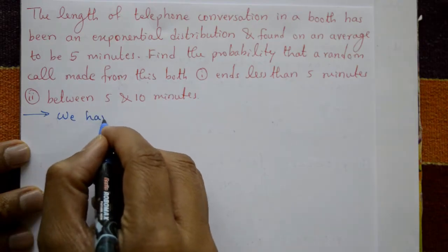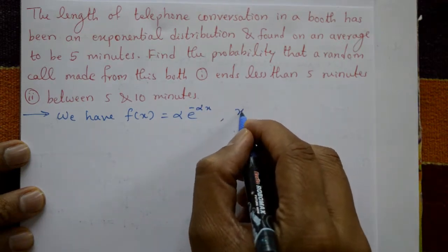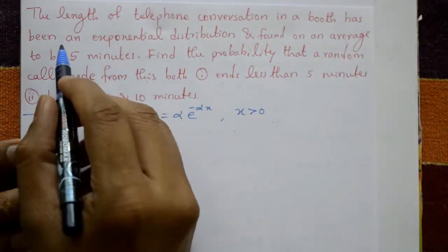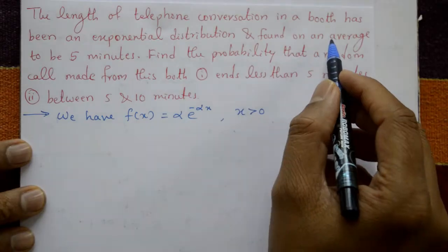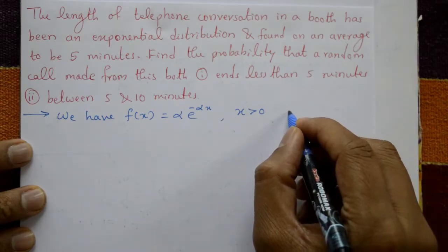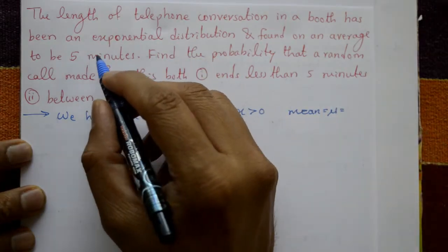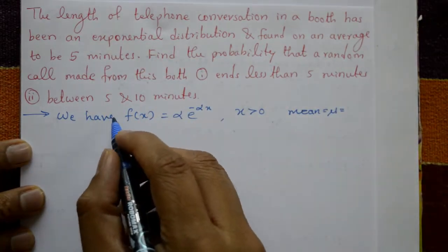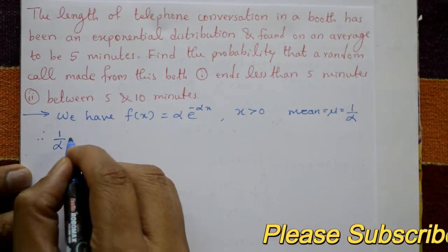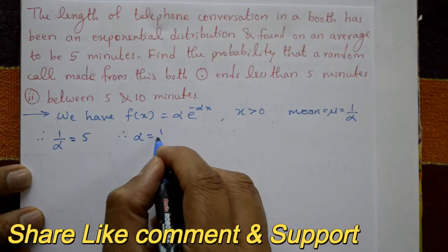We have f(x) = α · e^(−αx) for x > 0. The average, meaning the mean, is 5 minutes. In the exponential distribution, the mean is 1/α. Therefore, 1/α = 5, which gives us α = 1/5.